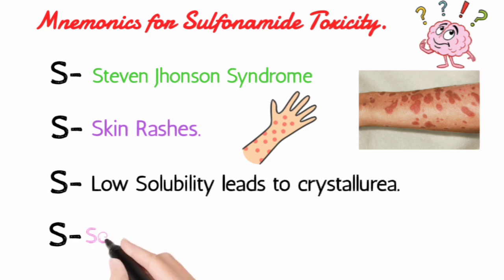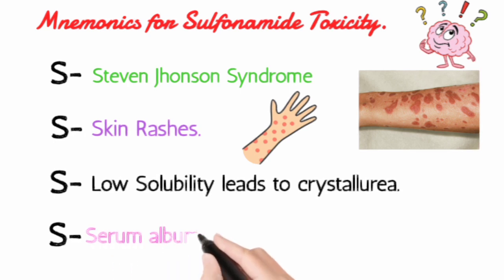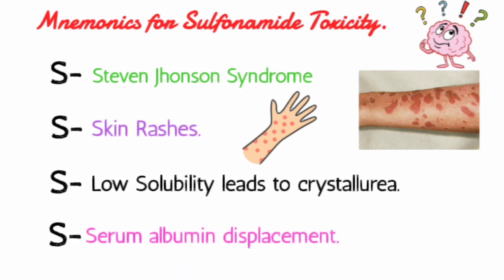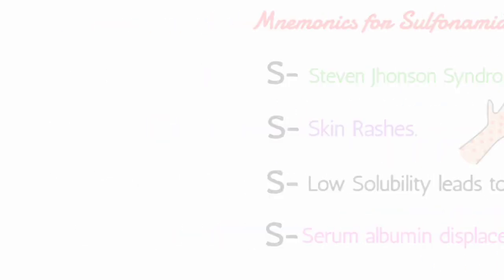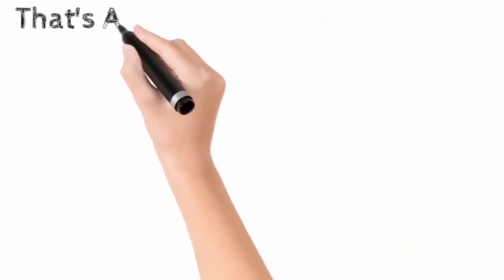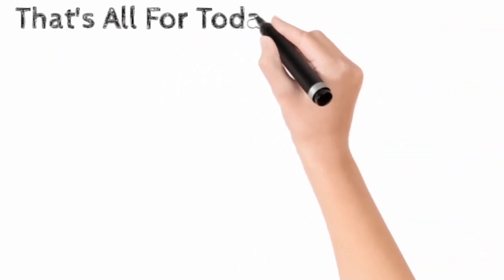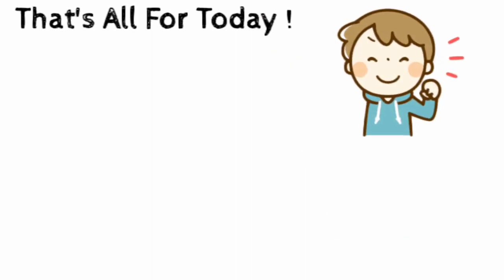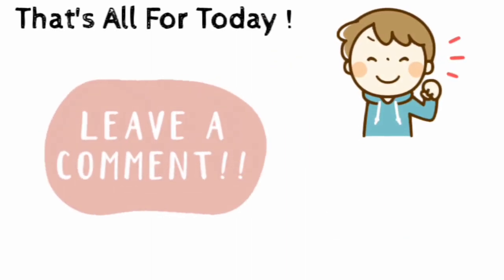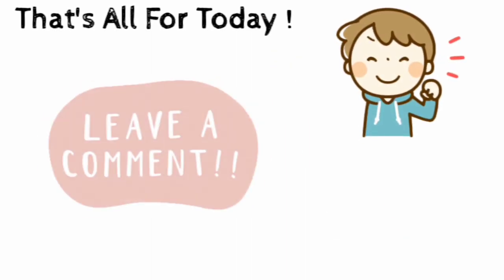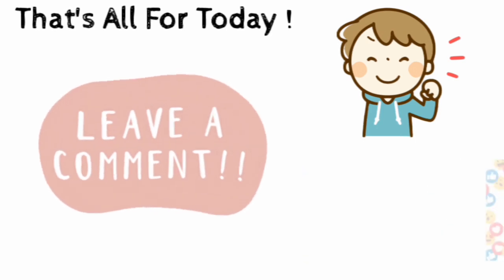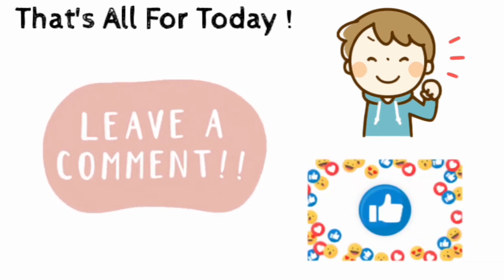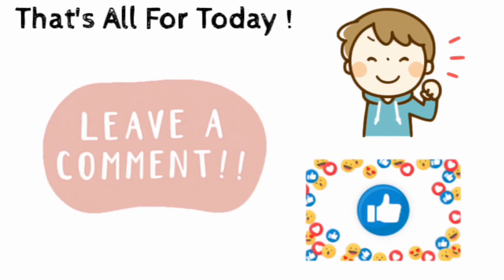The fourth S is for serum albumin displacement, which mainly causes kernicterus in the newborn child. That's all for today. Hope you liked this video. If you have any queries, please let me know in the comments below. Keep sharing and keep supporting, and as always, stay tuned for more.